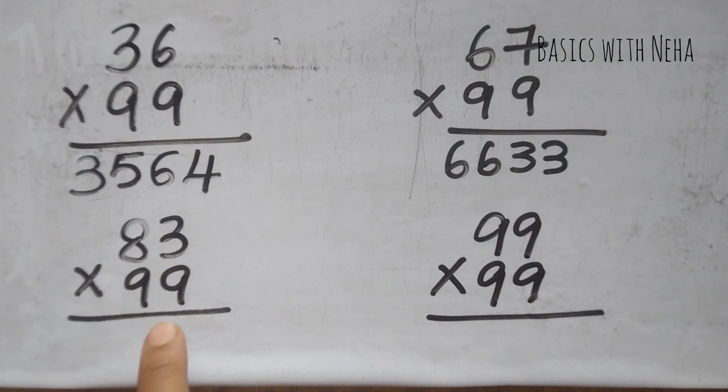Let's try 83 into 99. It becomes 82. 9 minus 8 is 1, 9 minus 2 is 7.